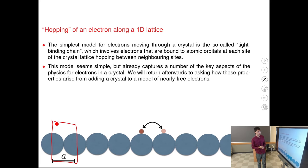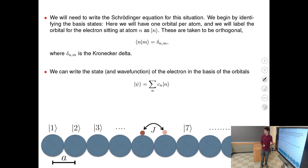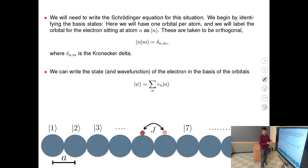This is a simplified picture of what the tight binding model accounts for. More rigorously, we will solve the time-independent Schrödinger equation to find the energy spectrum of n electrons on n atoms. We find eigenstates of electrons in a chain of stationary atoms — much like we solved for normal modes of vibration for the vibrating-atom chain.